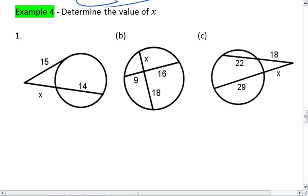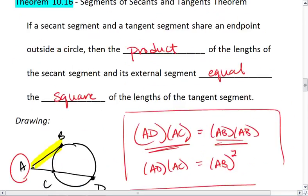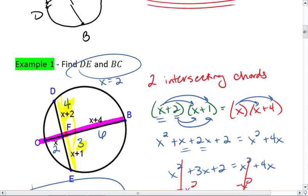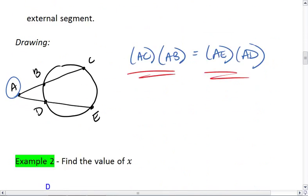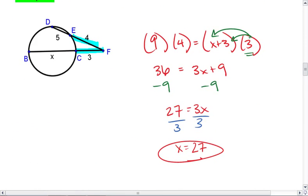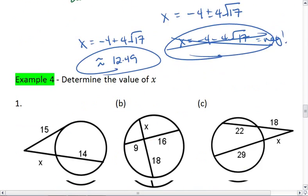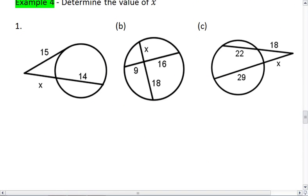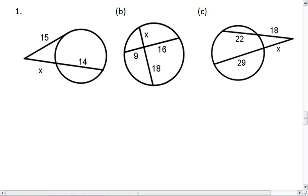Here's one more example just for practice. In each of these problems below, I want you to find the value of x. This does capture the three situations we've looked at, where we have segments of chords, segments of secants, and segments of a tangent and a secant, which is right here. So use your three theorems and solve for x in each of these three cases. Pause your video and then resume when you're ready to check your solution.